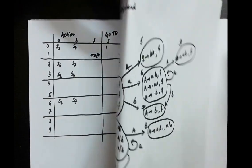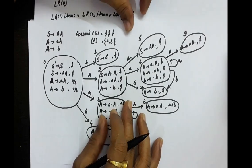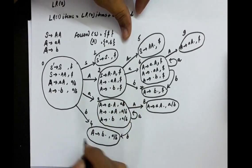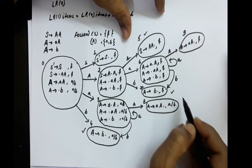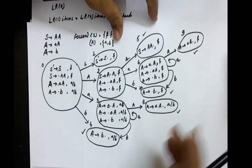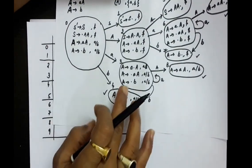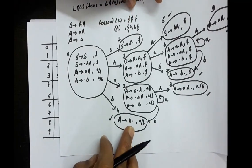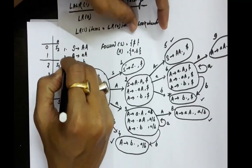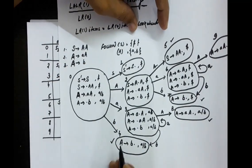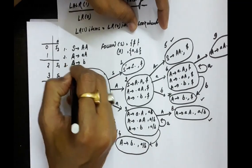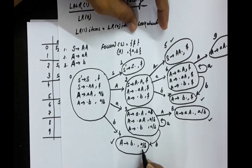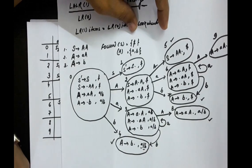Now the part of the reductions: you will have to find out what are the final items, what are the states that are producing the final items. So, state 4, state number 5, state number 7, state number 8, and state number 9. Starting from state number 4, this is A produces B dot. If you number these productions 1, 2, and 3, whatever are the lookaheads, you will be writing the productions in those places only.